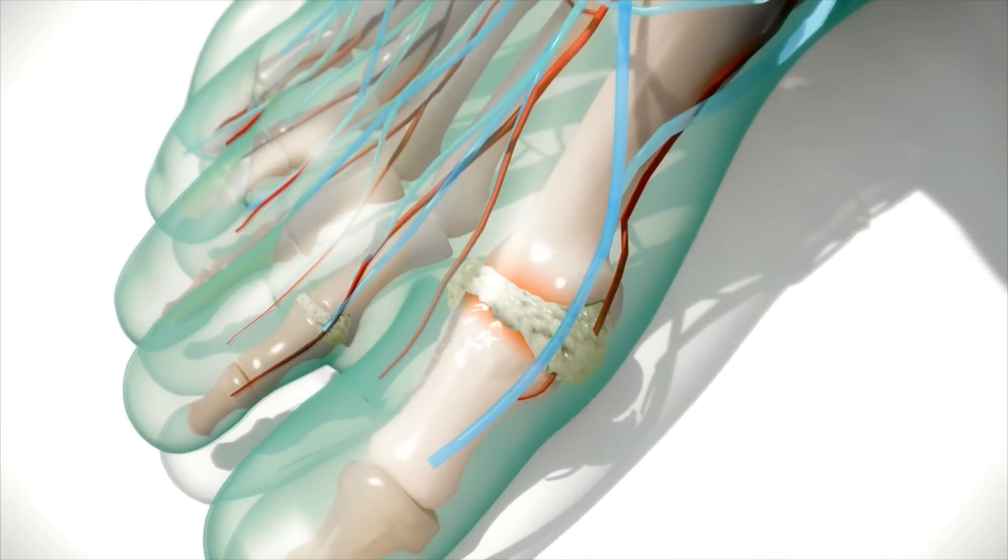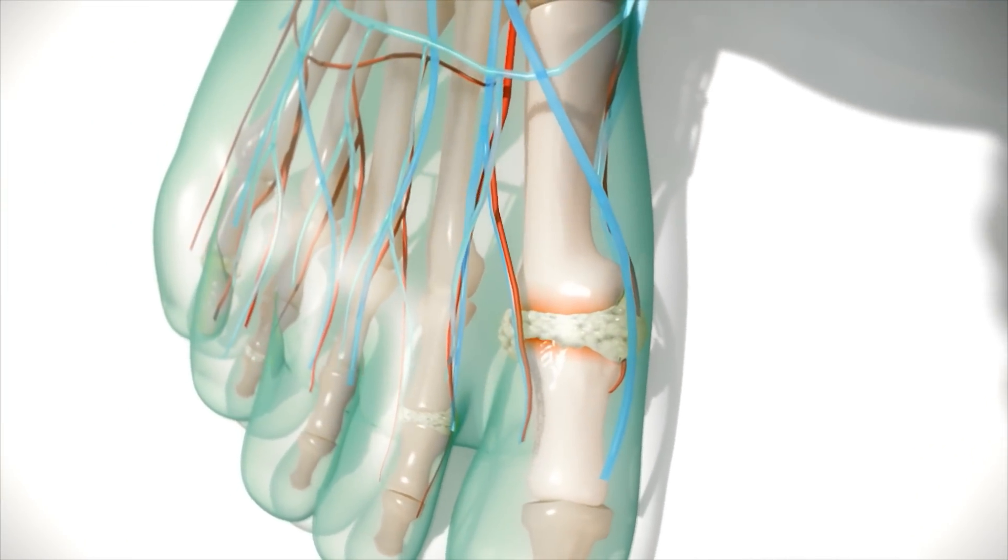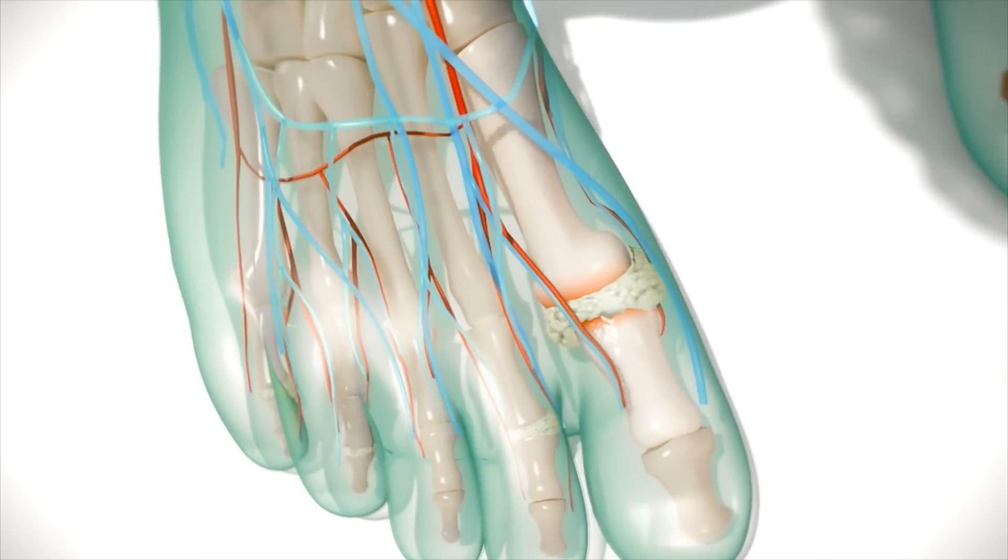Acute gout flares can be caused by many factors, including joint trauma, dehydration, and fluctuations in serum uric acid levels.